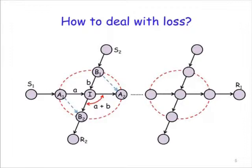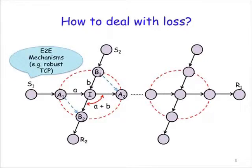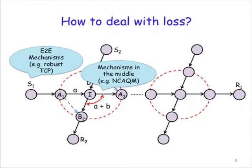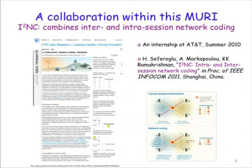There are several approaches to this problem. Some of them operate at the end systems, some others operate at intermediate nodes. As part of this project, we developed a new scheme which we call I2NC because it combines inter-session and intra-session network coding to deal with loss in this environment. This work was a collaboration with AT&T Research and led to an Infocom paper.